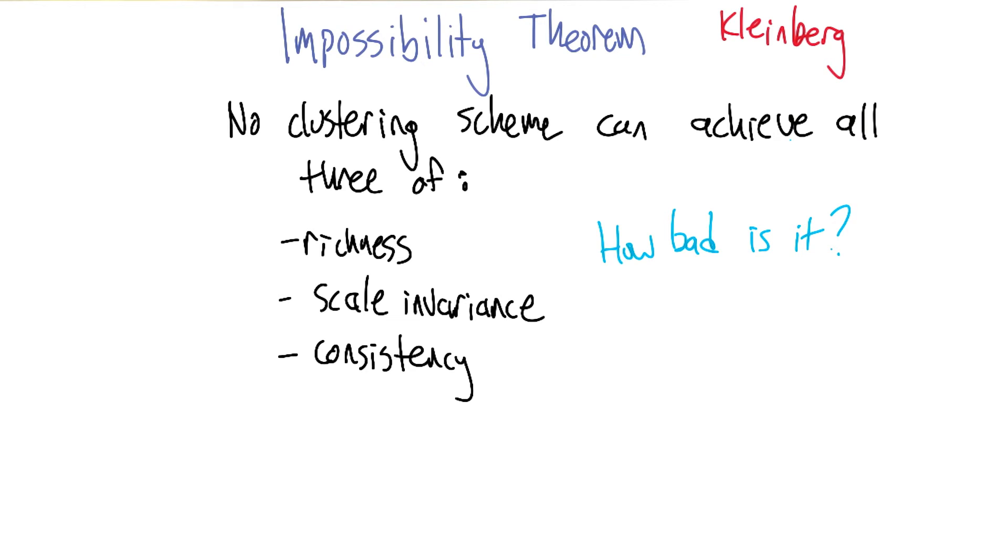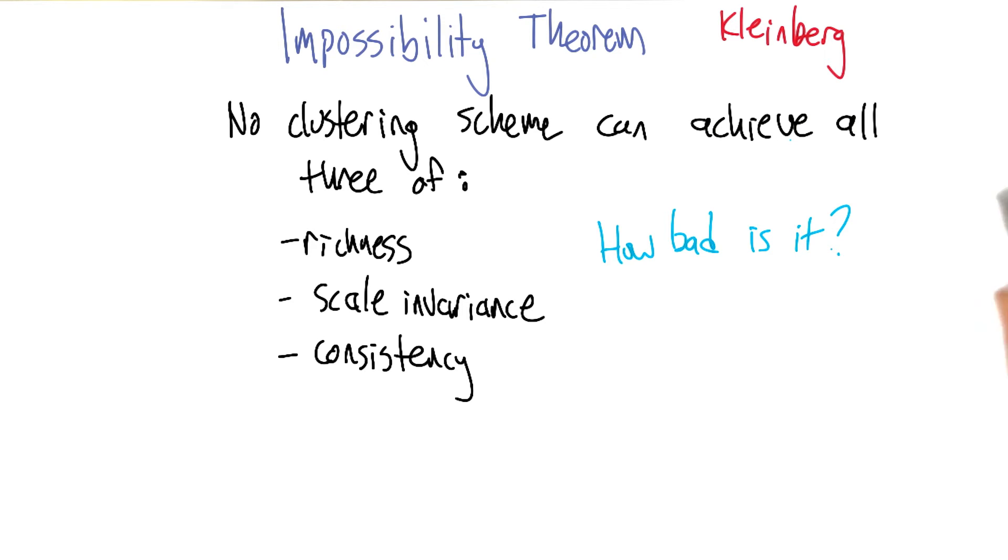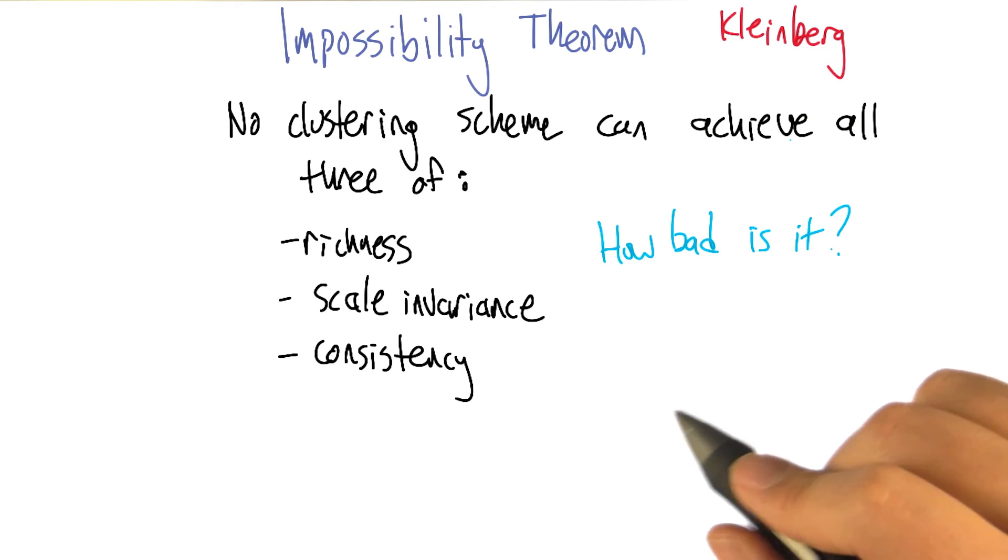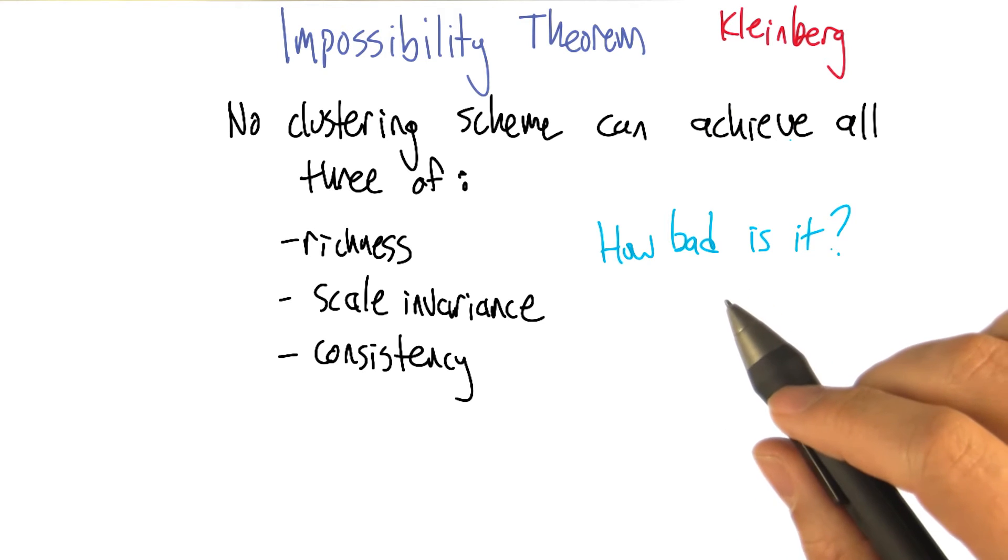Right. But just how bad is it? When you can't have all three, can you come close to having all three? Can you have like 2.9 of them? Well, you can definitely have 2 of them because that's what we did in the quiz.